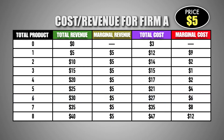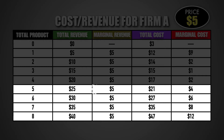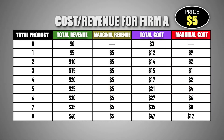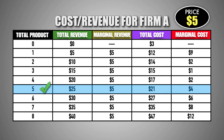Now that the marginal cost to produce each unit is higher, the firm has an incentive to reduce production to only five units because the fifth unit is the last unit that the firm can produce before marginal cost becomes greater than marginal revenue. According to the Optimal Output Rule, the firm should decrease production and produce five units of good M in order to maximize profits.